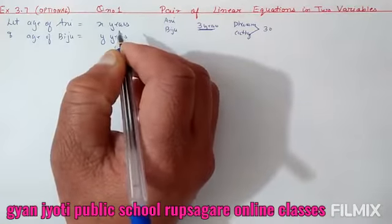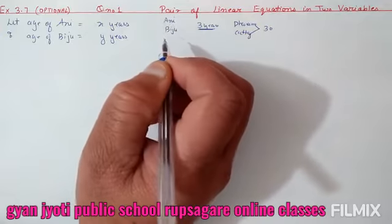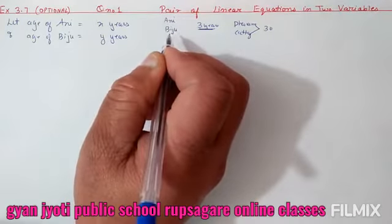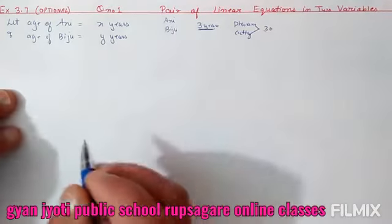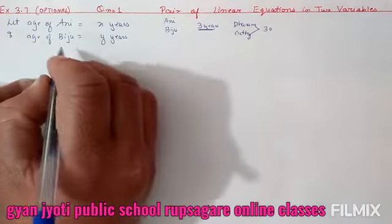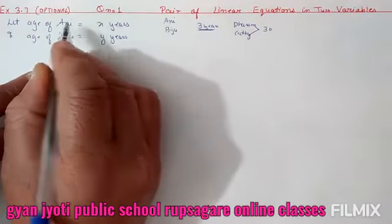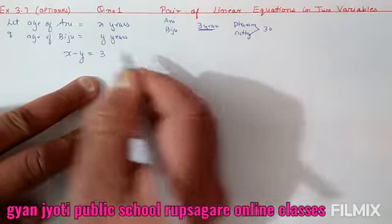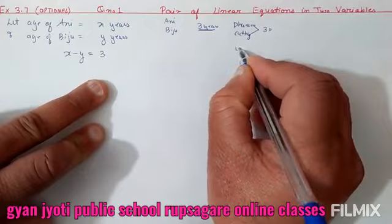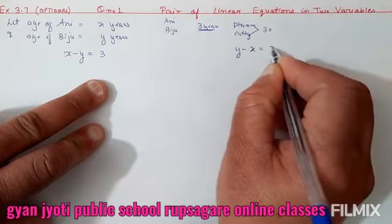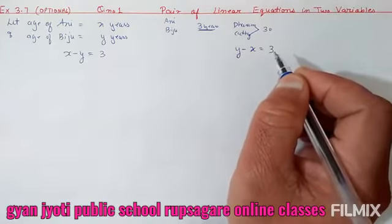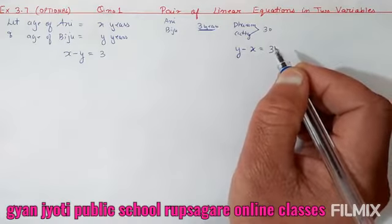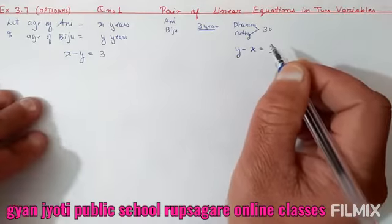Sabse pehle diya hua hai ki Ani aur Biju ka jo difference hai wo 3 saal ka hai. Lekin inmein kaun bada hai, kaun chota hai, ye clearly question mein nahi diya hua. Toh ismein do baatein ho sakti hain. Agar Ani bada hai toh x - y = 3 hoga. Agar Biju ko bada maante hain toh y - x = 3 hoga. Toh ye cases ke according aapki equation banegi.